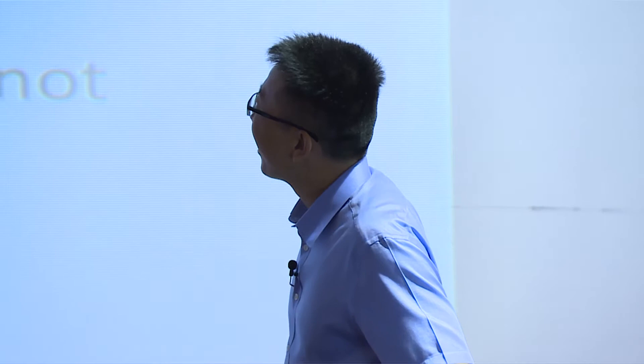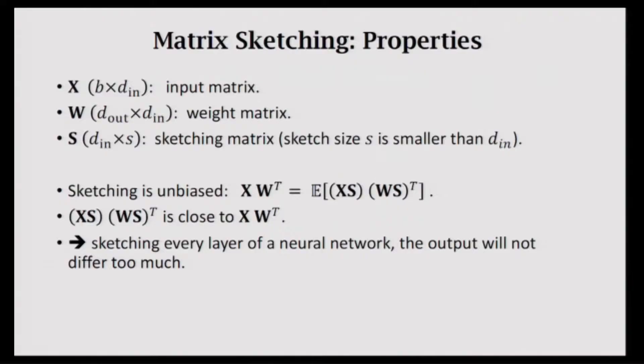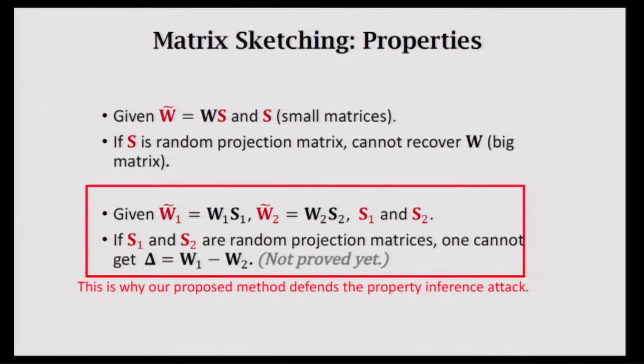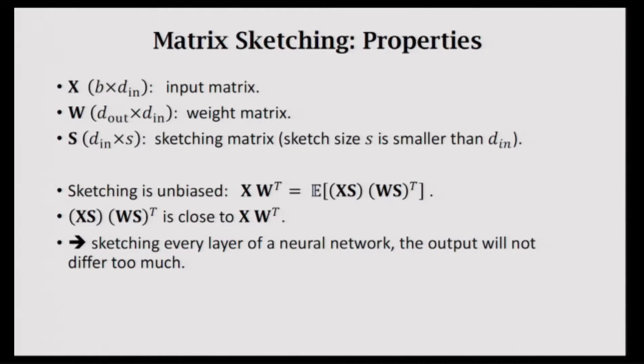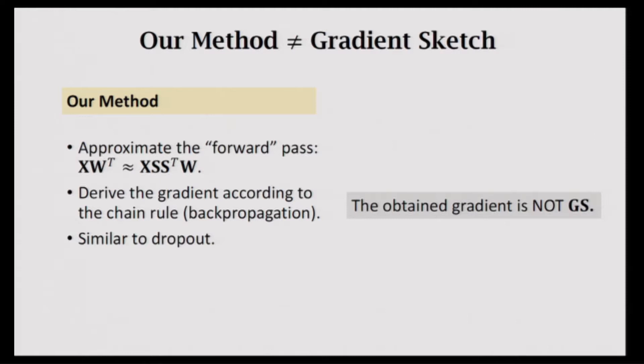Matrix sketching has nice properties. We can apply any matrix to W to make it random, so people cannot infer anything meaningful. However, we need properties that do not hurt prediction accuracy. One such property is that sketching is unbiased. If we apply sketching to every layer of a neural network, the output will not differ too much—that's the idea of dropout. Dropout uses uniform sampling. My proposed method is different from Peter's gradient sketch. It looks similar but is actually different—our method does the approximation in the forward path by sketching the input and parameters.